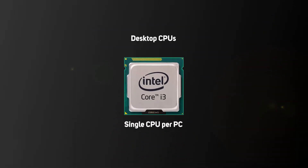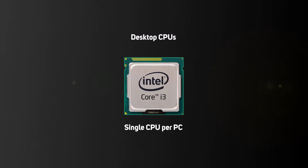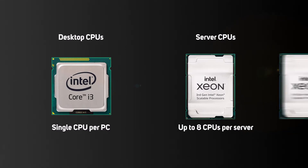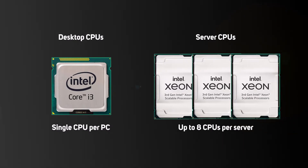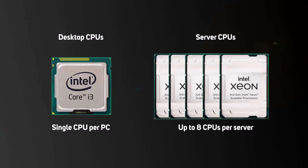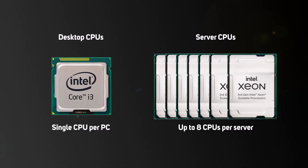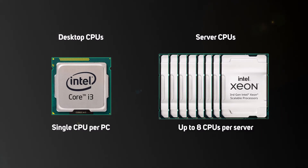The other big area of difference between server and desktop CPUs is scalability. Desktop PCs only ever have a single CPU, but the vast majority of servers have or at least can support two CPUs. Adding a second CPU to a server provides more cores and more memory, boosting individual application performance and allowing more applications to run in parallel. And finally, it's worth noting that unlike desktop CPUs, which are designed for short bursts of activity a few hours a day, server CPUs are engineered for the 24/7/365 operation that servers demand.